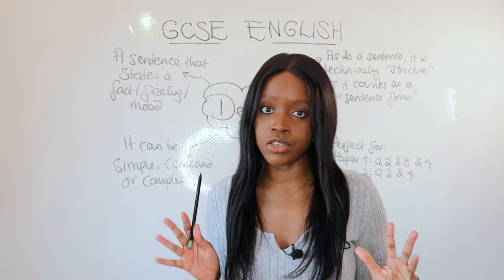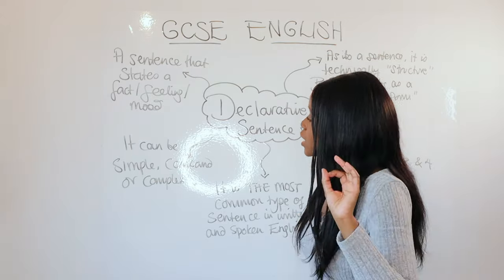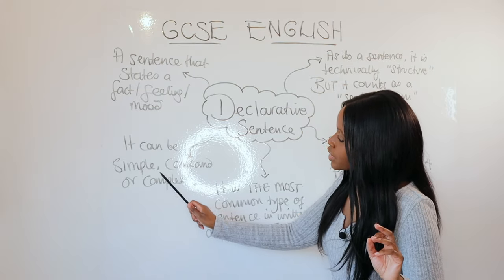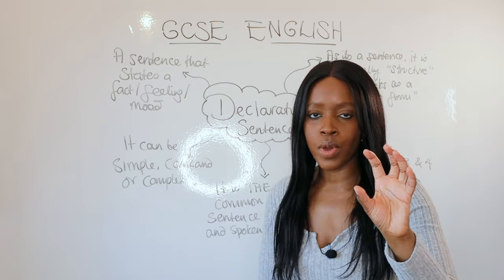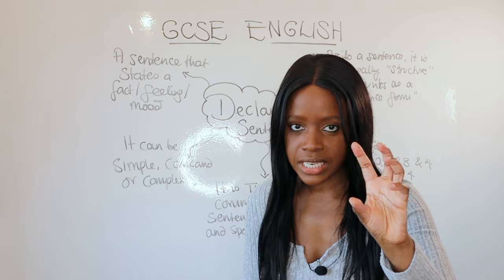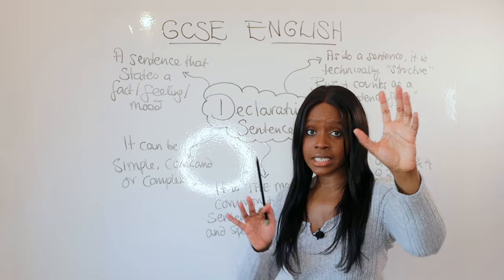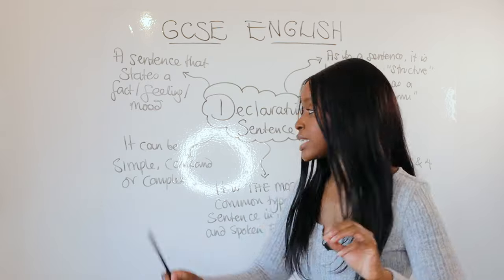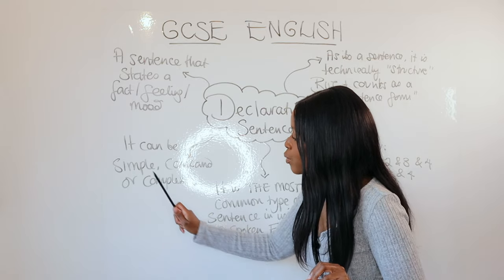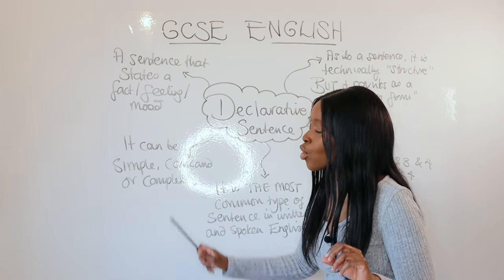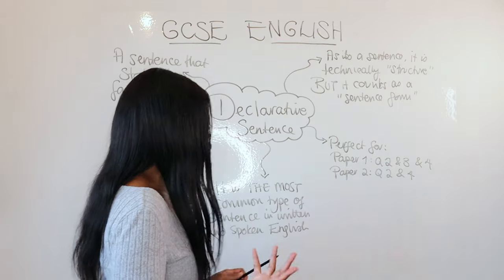Even as I'm speaking right now, I'm speaking in a series of declarative sentences. In terms of how a declarative sentence is structured, you can find it in either long or short sentences. In other words, a declarative sentence can be a simple, compound, or complex sentence, and it is the most common type of sentence in written and spoken English.